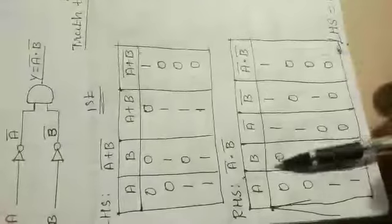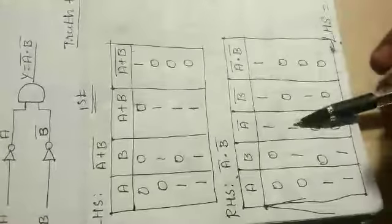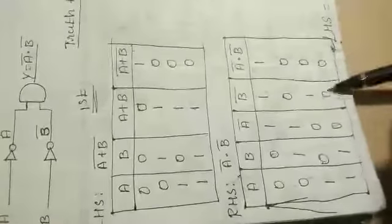On the right hand side, a bar into b bar, the columns are: a, b, a bar, b bar, and a bar into b bar. The complement of a is 1, 1, 0, 0. The complement of b is 1, 0, 1, 0. So a bar into b bar is: 1 into 1 = 1; 1 into 0 = 0; 0 into 1 = 0; 0 into 0 = 0. Hence LHS is equal to RHS.